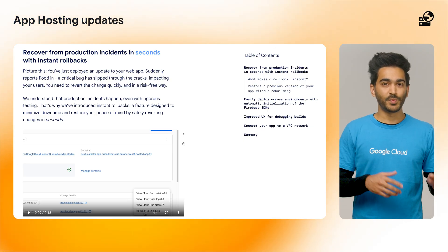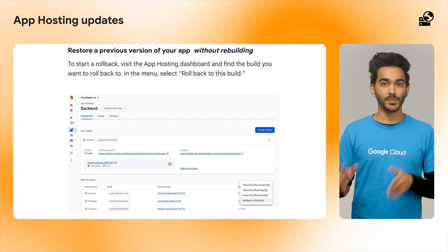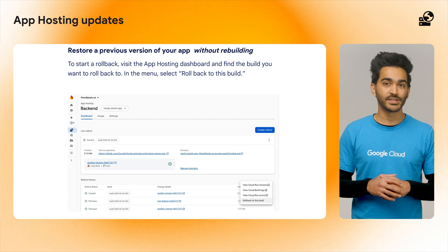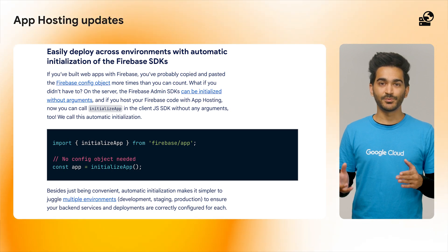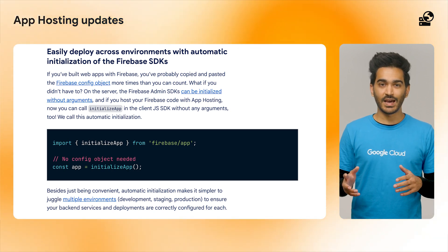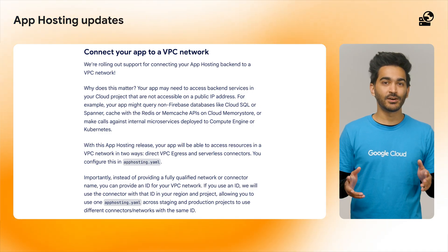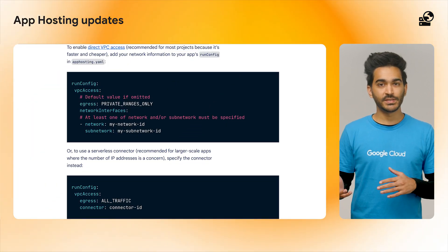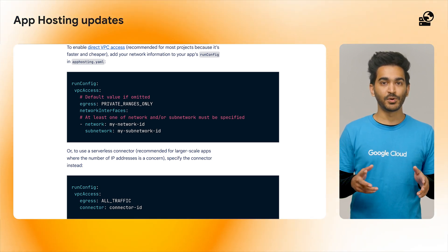Firebase App Hosting also released some exciting updates. There's a new instant rollback feature, which lets you restore a previous version of your app without rebuilding. When you click the rollback to this build button in the Firebase console, rather than creating a new build from an old commit, App Hosting simply takes the old container image and makes it live again. We've also made it easier to initialize the Firebase SDKs when using App Hosting — simply call initialize app with no arguments and we'll automatically configure Firebase for you. And we are rolling out support for connecting your App Hosting backend to a VPC network, either through direct VPC address or serverless connectors, both configurable through VPC access in your apphosting.yaml file.